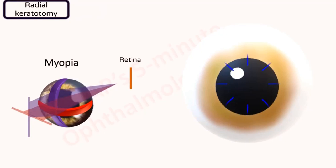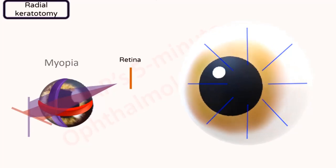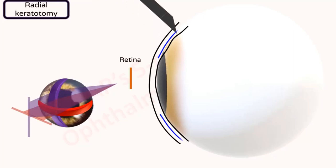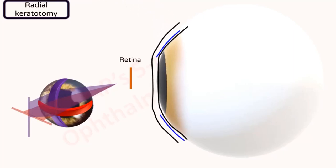Radial keratotomy is performed for myopia. Radial incisions are made with a diamond knife to about 85–90% of the corneal thickness. This is an axial view of the procedure. This results in central flattening of the cornea, thus decreasing myopia. This procedure has become obsolete now because of better procedures and corneal stability.